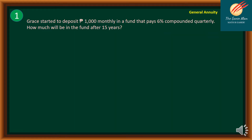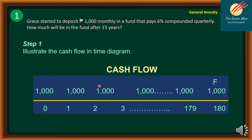Step number one: illustrate the cash flow in the time diagram. The cash flow is 1,000 pesos every month, and at the end we want to find the future value after 180 payments.